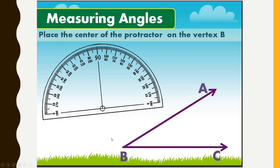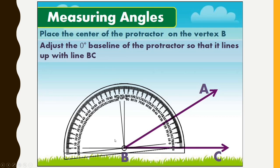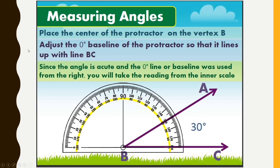To measure an angle, place the center of the protractor on the vertex B, and adjust the 0-degree baseline of the protractor so that it lines up with ray BC. Since the angle is acute and the 0-degree baseline was used from the right, you will take the reading from the inner scale — always start measuring from 0 degrees.